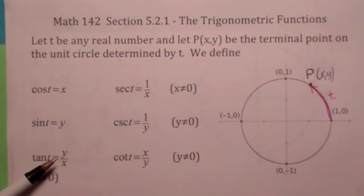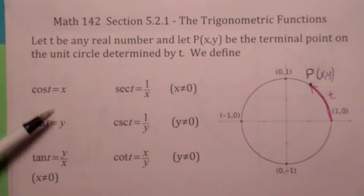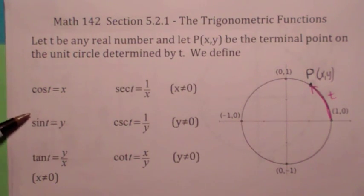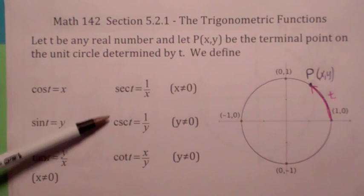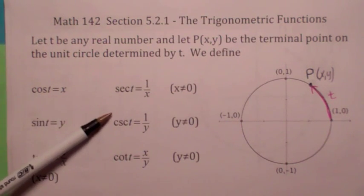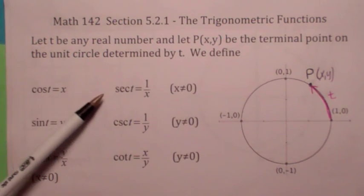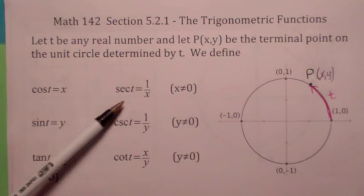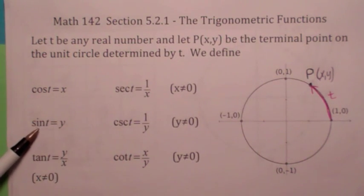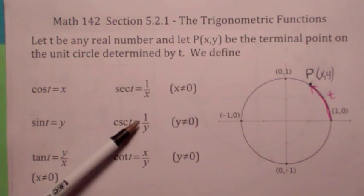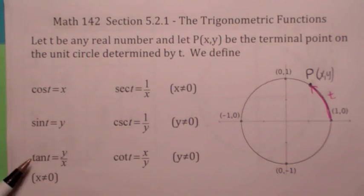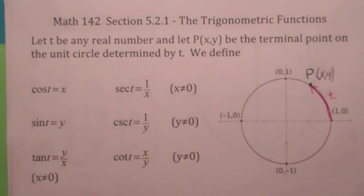The tangent is the ratio of y over x. Focus on those three trig functions, because the other three are just the reciprocals of those. The reciprocal of cosine of t is the secant of t, which would be 1 over x. The reciprocal of sine of t is the cosecant of t, which is 1 over y, and the reciprocal of tangent t is the cotangent t, which is x over y.